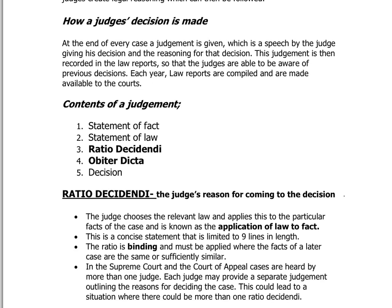The ratio decidendi is the judge's reason for coming up with a decision — in other words, why that person is guilty or not guilty. This is the binding aspect. When we talk about judges following each other's decisions, we're not following the facts or the different bits of law — we are following the ratio. The same concepts and ideas, the ratio, will be applied again and again to cases with the same or similar facts, no matter where the case is heard.